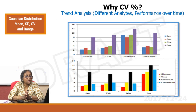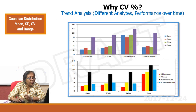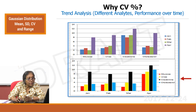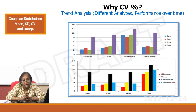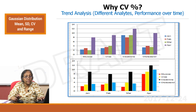Trend analysis can be done of different analytes over time — January, February, March, April — or you can compare the same analyte like glucose over a period of months and look at higher CVs to find out why they have gone up. It is a very easy comparison if you have CV.